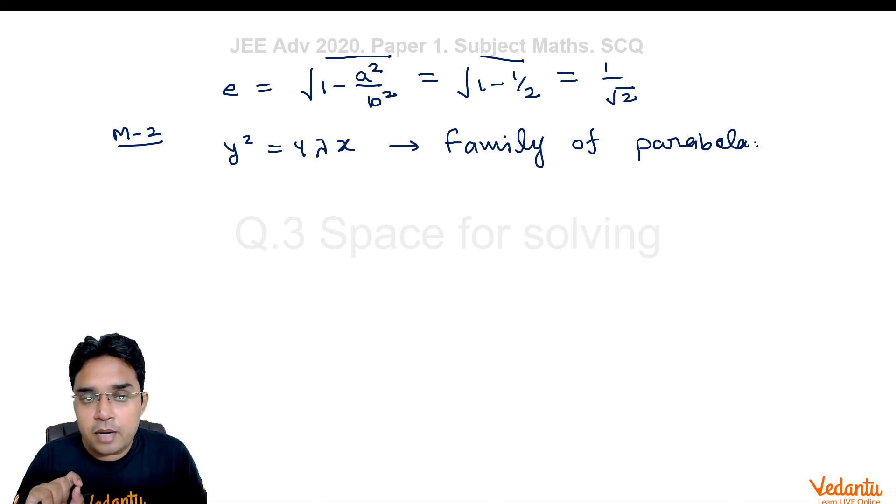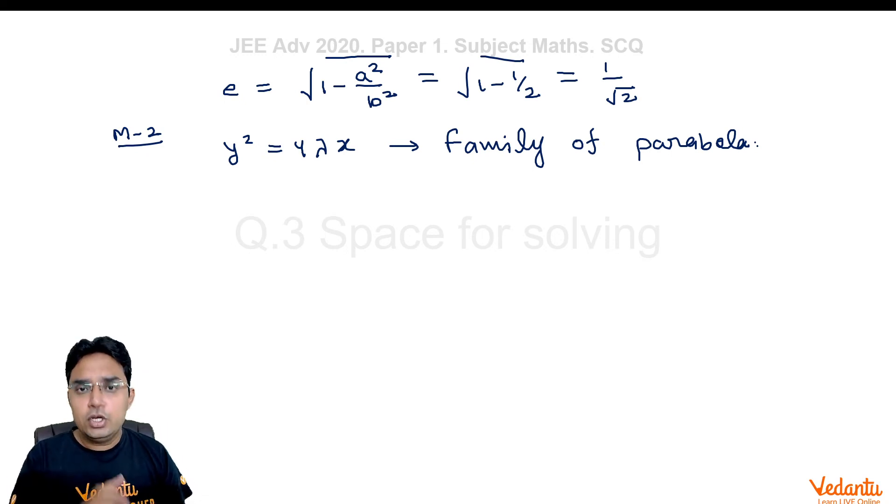Now, because they are talking about ellipse cutting it at 90 degree, let us try to see what could be the orthogonal trajectory for this family of parabola. You know how orthogonal trajectory is found. First, we will be forming a differential equation and to do that we do the differentiation.